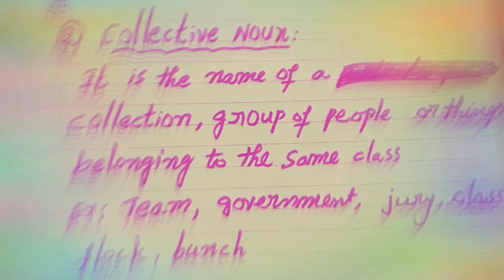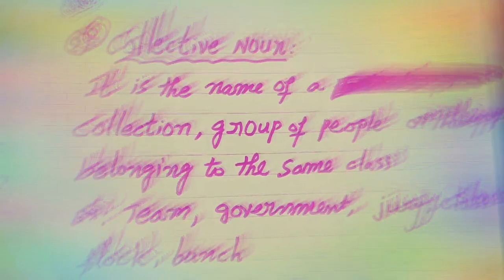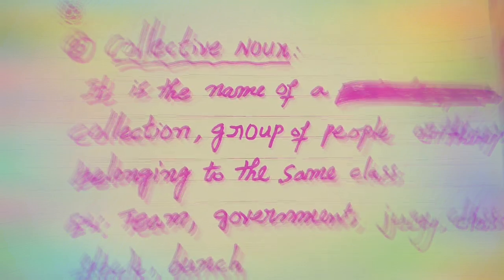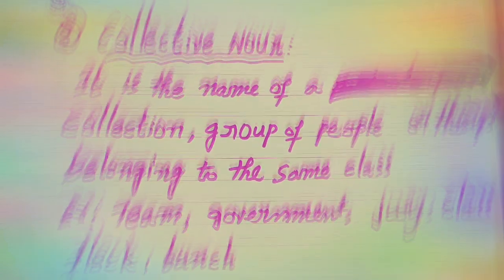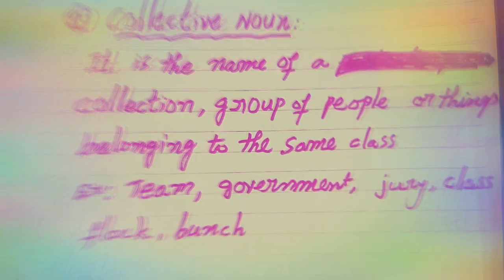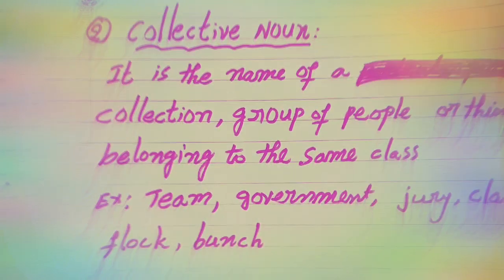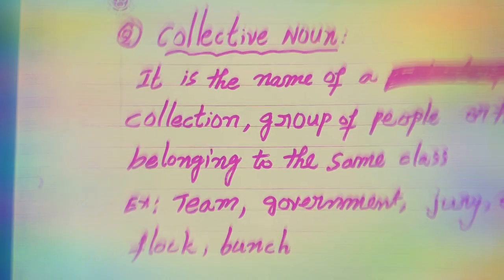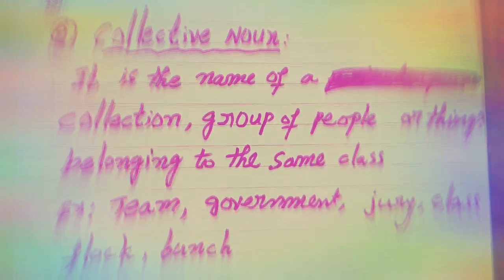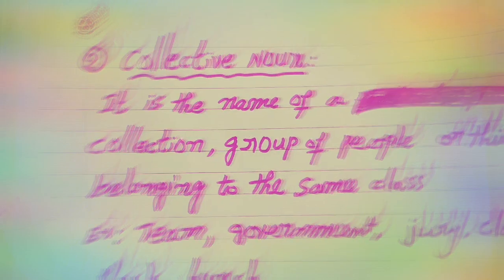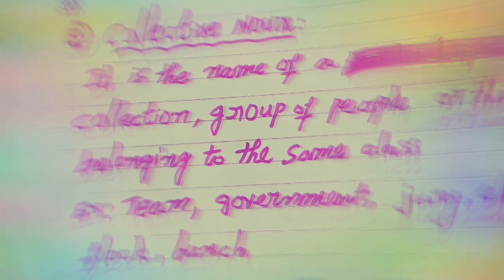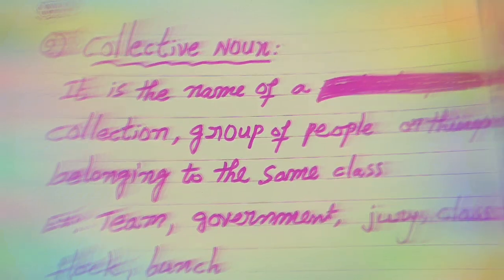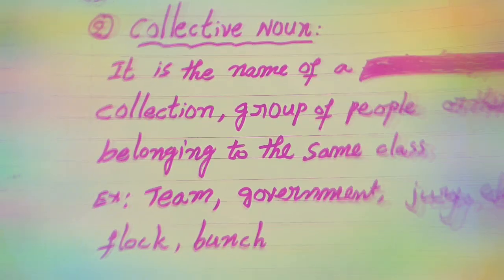Collective noun is the name of a collection or group of people or things belonging to the same class. For example, a cricket team, football team, Indian government, China government, Japan government, American government. A group of judges is called a jury. Class examples include rich class, poor class, and middle class.